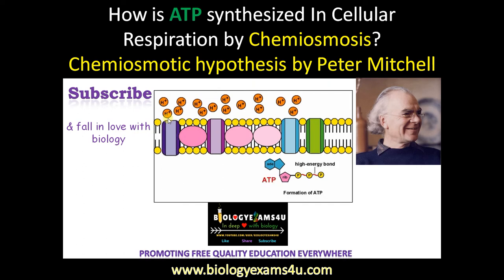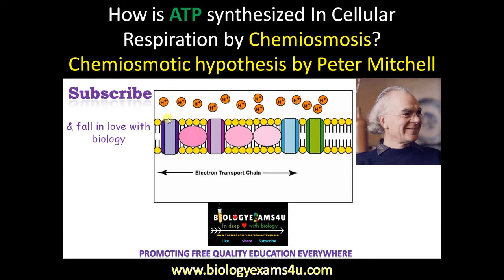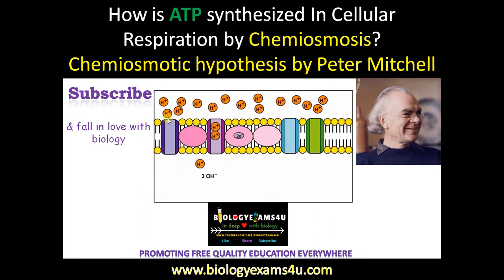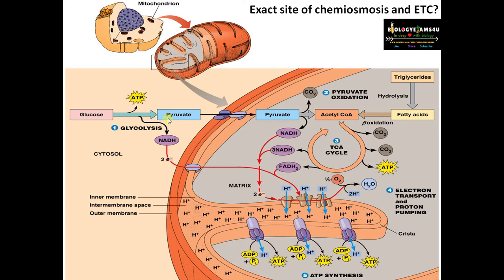Hi friends, once again welcome to biologyexams4u.com. Today let us understand how ATP is synthesized in cellular respiration by chemiosmosis — the revolutionary hypothesis proposed by Peter Mitchell in the 1960s. Please watch till the end for complete understanding.